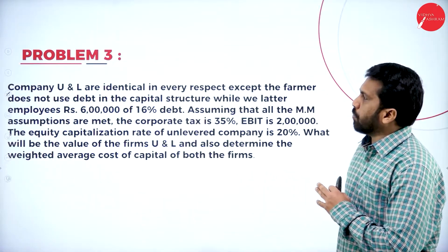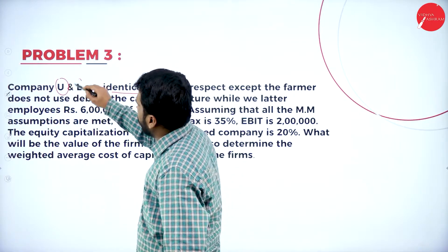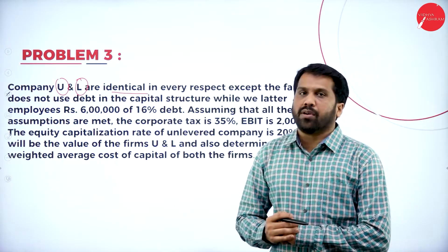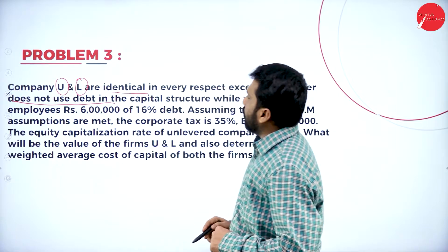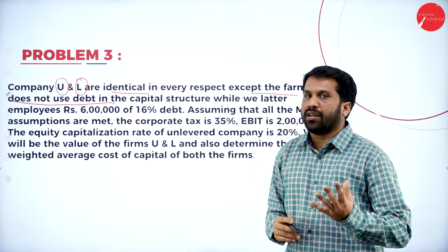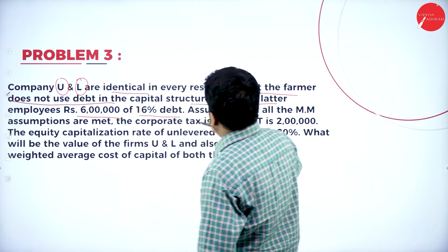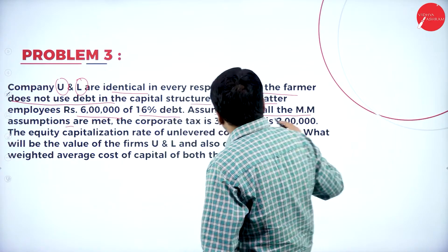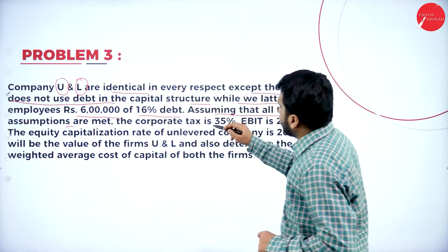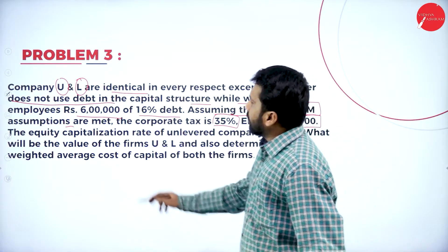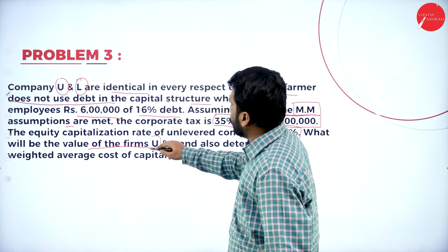Problem number 3 — a 10-mark problem on the Modigliani-Miller approach. Companies U and L are identical in every respect except U does not use debt (unlevered) while L employs 6 lakh of 16% debentures (levered). Assuming all MM assumptions are met, the corporate tax is 35%, EBIT is rupees 2 lakh, and the equity capitalization rate for the unlevered company is 20%. Calculate the value of firms U and L, and also determine the weighted average cost of capital (WACC) of both firms.